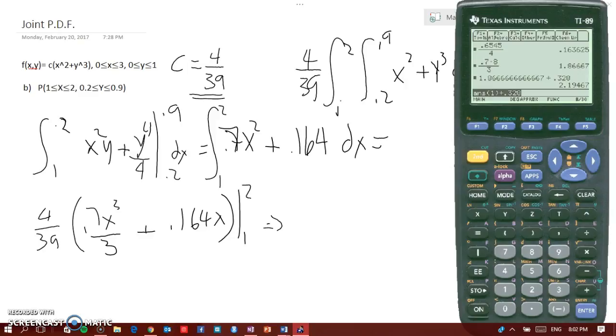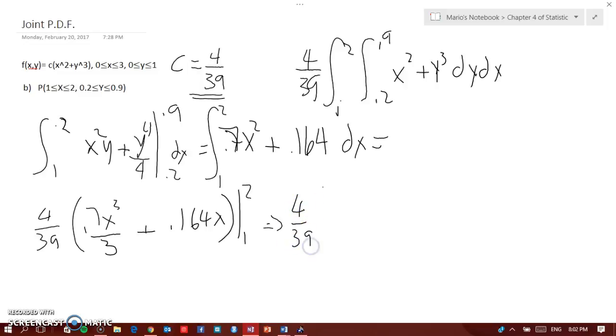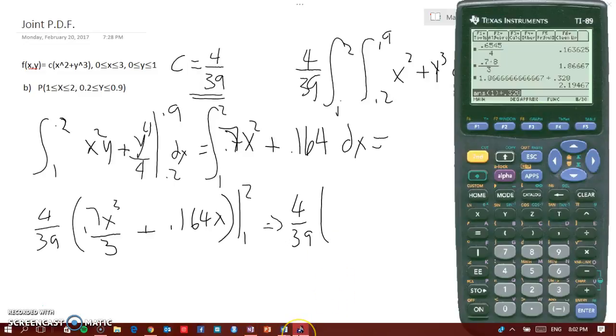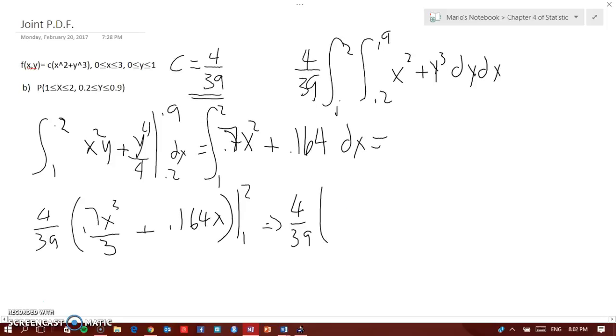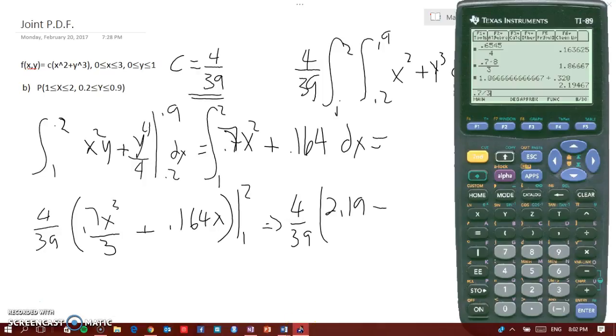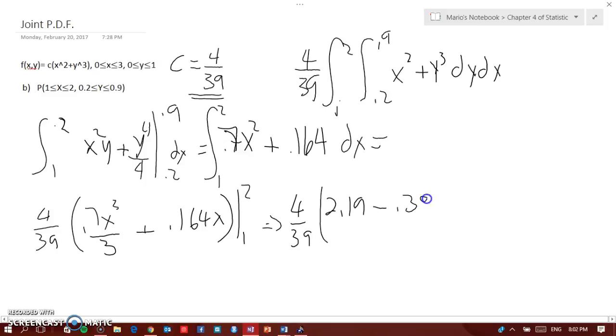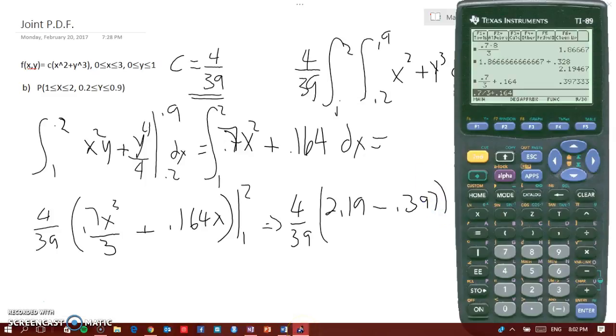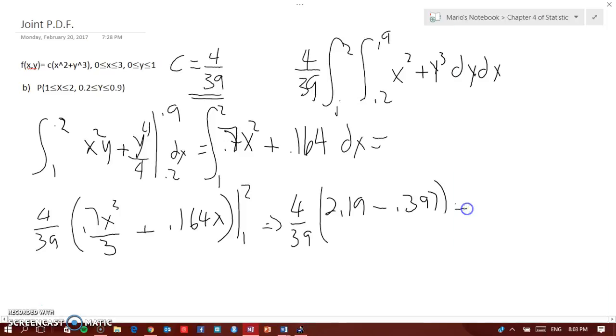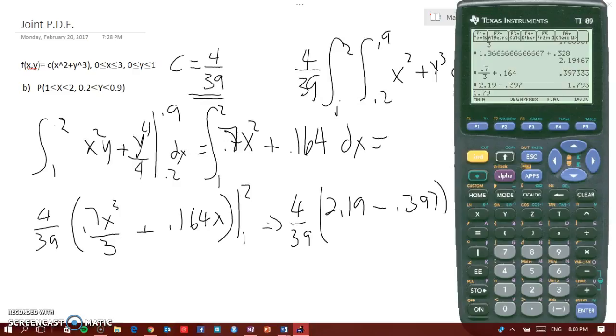Plus 0.328, we get 2.19. So we get 4 over 39 times (2.19 minus 0.7 over 3 plus 0.164). 0.7 divided by 3 plus 0.164 equals 0.397, so 2.19 minus 0.397 equals 1.79.